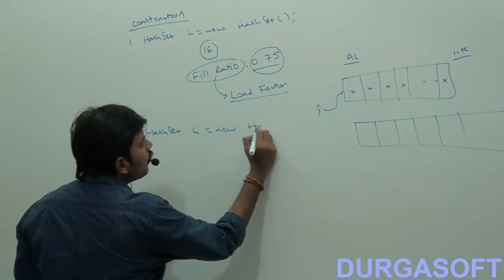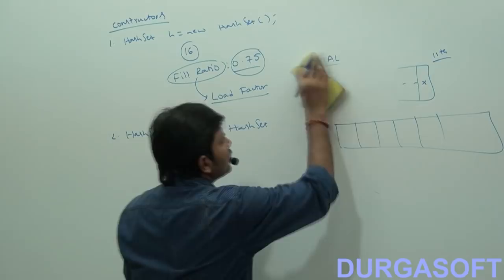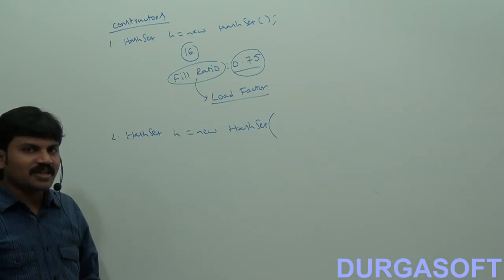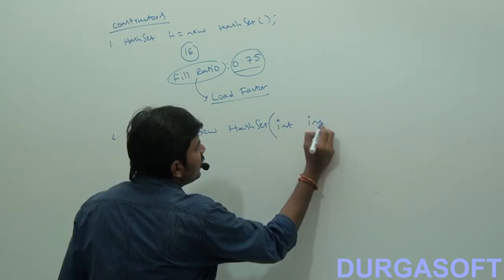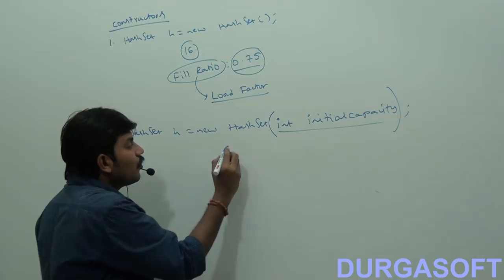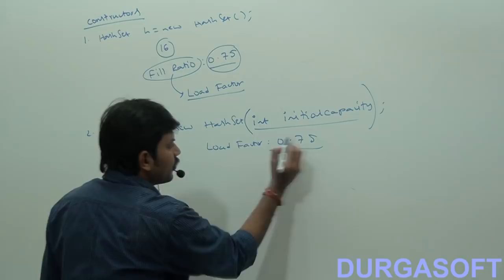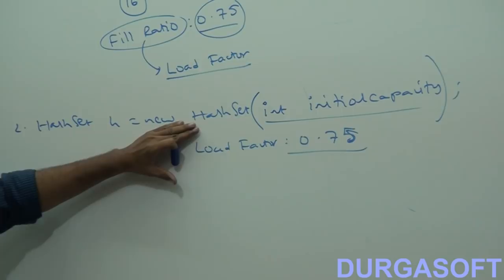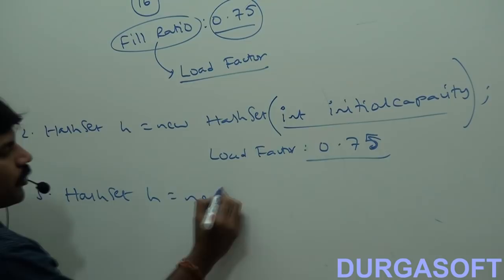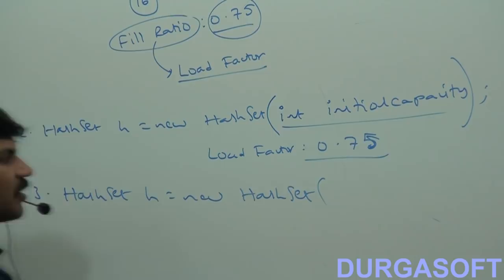The second constructor: HashSet h = new HashSet(int initialCapacity). This creates a HashSet object with your specified initial capacity, but the load factor remains the default 0.75.